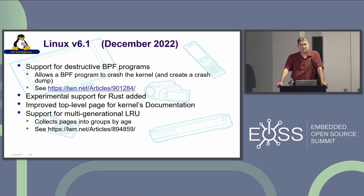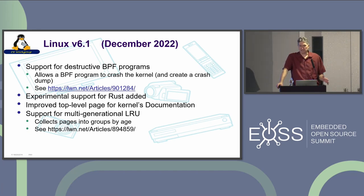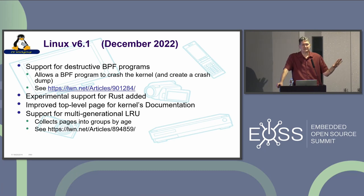In 6.1, BPF programs are supposed to run in a sandbox and never crash your system — well, now they can. This is actually intended: you can allow a BPF program to take the system down if it detects some kind of fault. BPF is starting to be used for all kinds of things — it's used for network filtering, it's been used a lot for tracing, and now there's a lot of discussion about security and how BPF can be involved. You can do these runtime modules that get compiled on the fly, inserted into the kernel, run in a sandboxed environment, and do interesting things with your kernel at runtime.